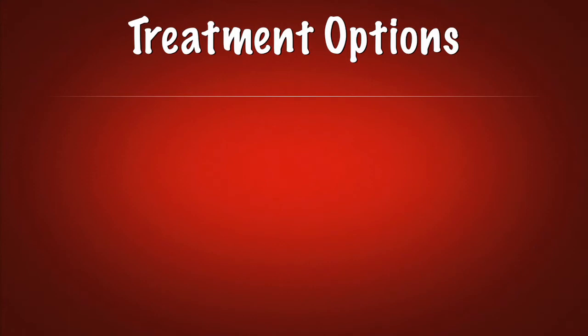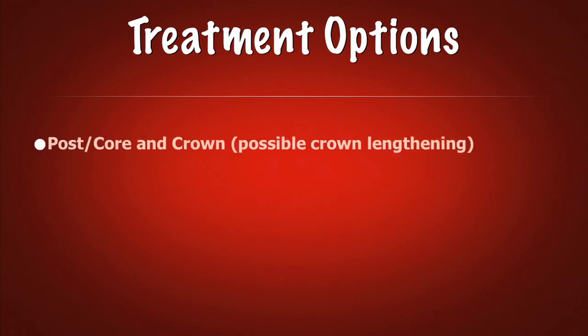Let's look at our treatment options, as we have several different options depending on the manner in which we would like to go forward. If we choose to save the tooth, we have the option of doing a post and core and crown, with the possibility of needing crown lengthening to gain additional tooth structure for ferrule and retention and resistance form, or orthodontic treatment to extrude the root to gain retention, resistance form, and ferrule for the crown.